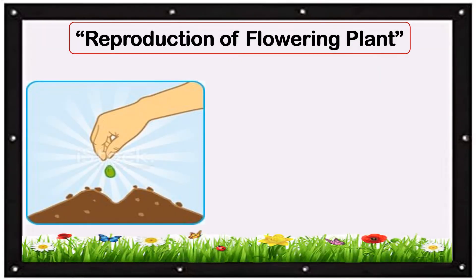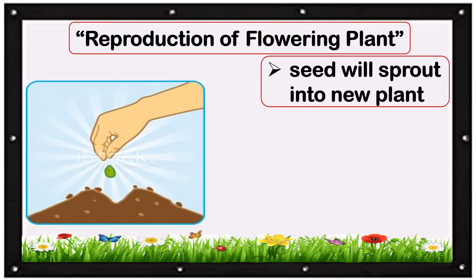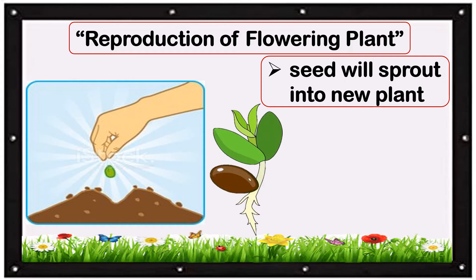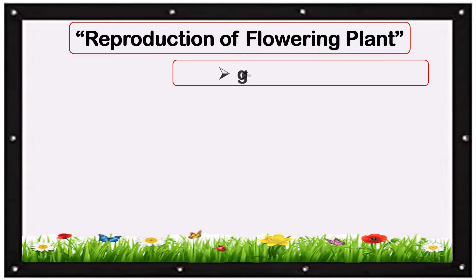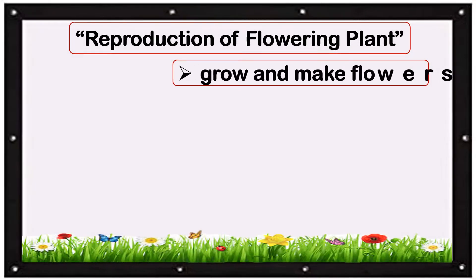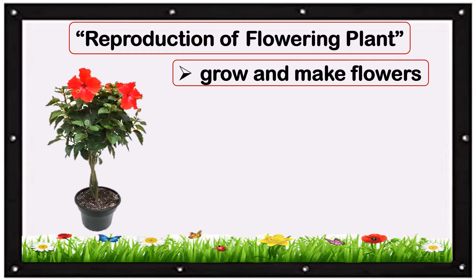And then you need to look for the right surrounding to plant the seed. After a few months or weeks, the seed will sprout into a new plant. After a few more months, the sprouted plant will grow and make flowers. And then it will continue its cycle.